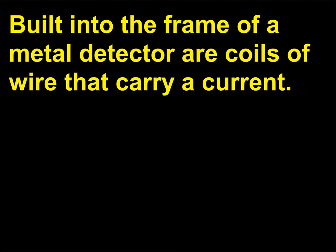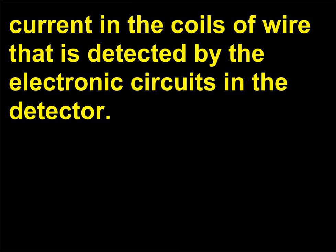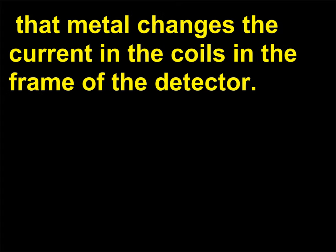Built into the frame of a metal detector are coils of wire that carry a current. When metal is close to the coils, the magnetic properties of the metal change the current in the coils of wire that is detected by the electronic circuits in the detector. When you walk through a metal detector with metal anywhere on your person, that metal changes the current in the coils in the frame of the detector.